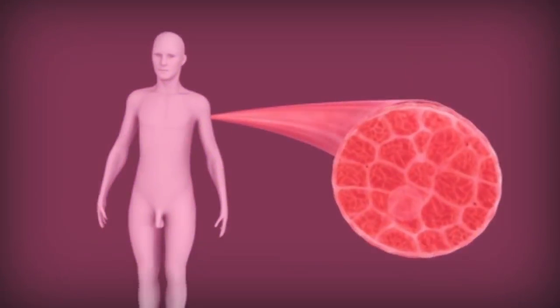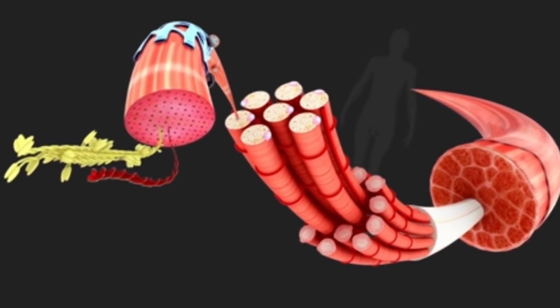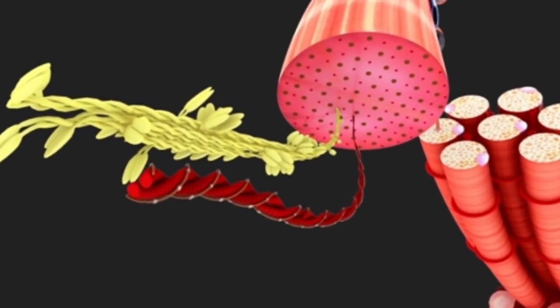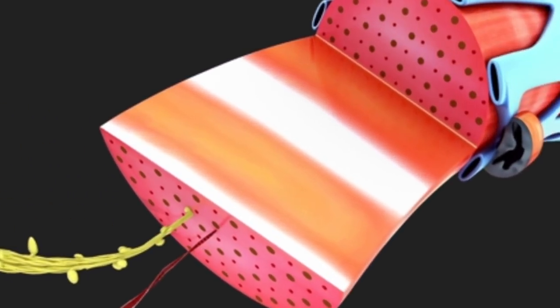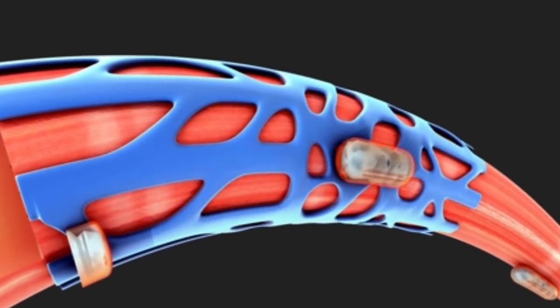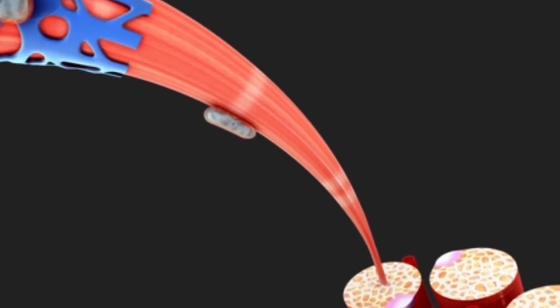Tendons. In tendons, collagen fibers are arranged in parallel bundles. Situated between the bundles are rows of fibroblasts, which are also called tendinocytes. Tendinocytes are surrounded by specialized extracellular matrix that separates them from the collagen fibrils. Tendons serve as structures which join muscles to bones.